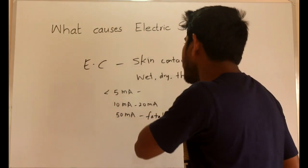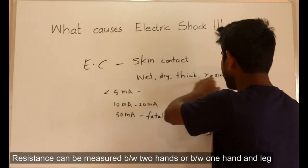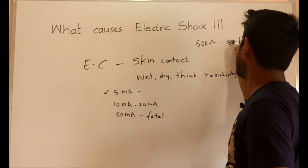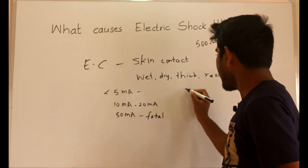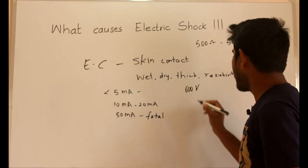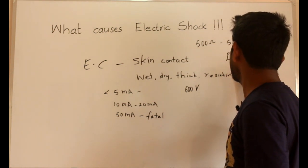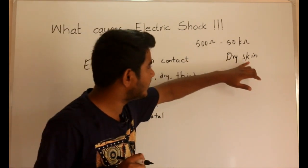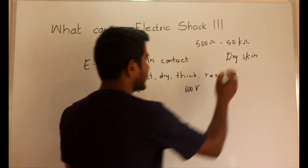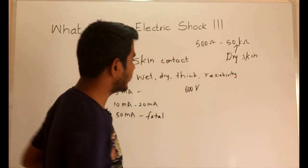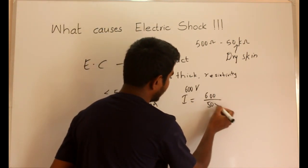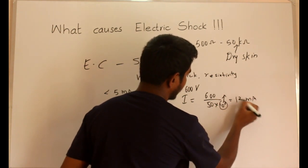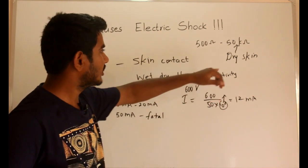The skin contact resistance, depending on wetness, dryness, thickness, and resistivity of the skin, varies between 500 ohms to 50 kilohms. Let us consider a 600 volt line, and let us consider dry skin. Dry skin will have more contact resistance than wet skin or a clammy hand. With dry skin, the resistance will be more, so let us consider the resistance is 50 kilohms. Then the current will be 600 volts divided by 50 kilohms.